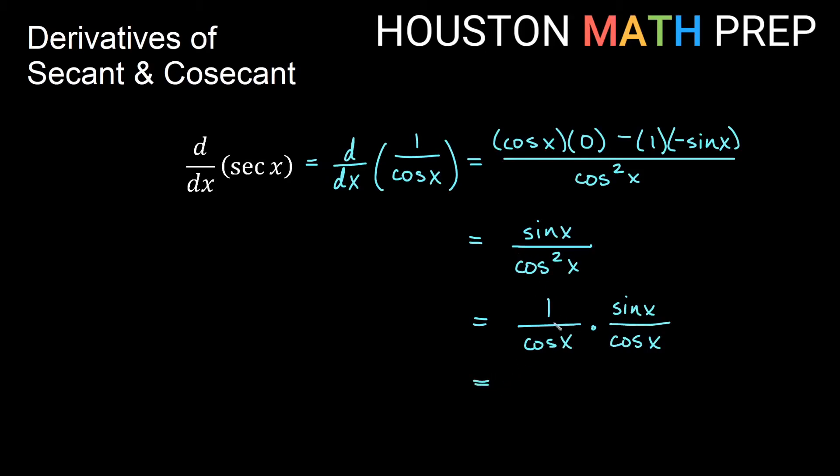Now what is 1 over cosine x? Well, reciprocal of cosine x we know is secant x. And what is sine x over cosine x? Well, that is tangent of x. So here we can see that our derivative for secant of x is actually secant x times tangent x.